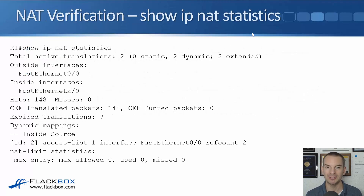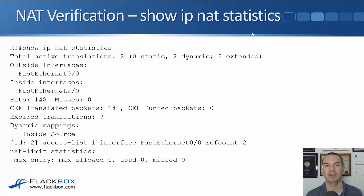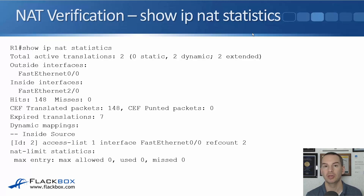Another useful command is show ip nat statistics. We don't use it as often as show ip nat translation, but it tells us how many addresses have actually been translated. So that was Dynamic NAT — in the next lecture I'll show you how to configure it with a lab demo.